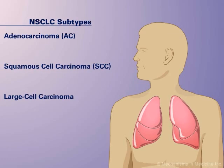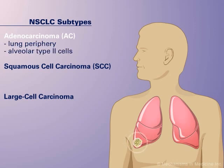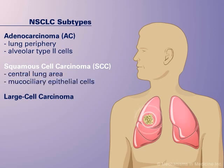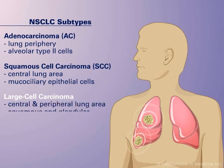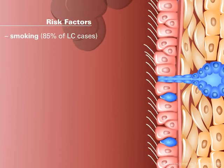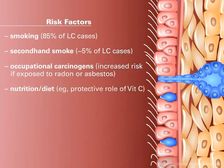The different types of NSCLC develop in different locations of the lungs. Adenocarcinomas develop in the peripheral portions of the lungs in alveolar type 2 cells. Squamous cell carcinomas develop near the center of the lungs in mucociliary epithelial cells, and large cell carcinomas may occur in either location with squamous and glandular features. Risk factors associated with NSCLC include smoking, second-hand smoke, occupational carcinogens, and diet and nutrition.